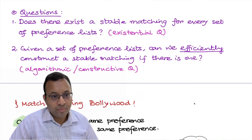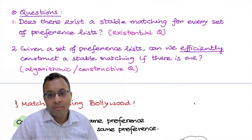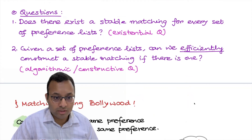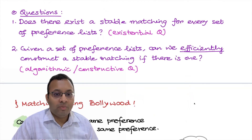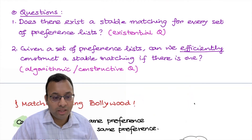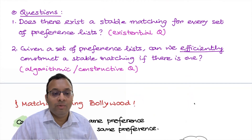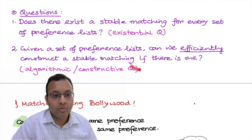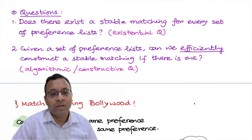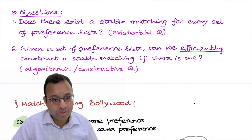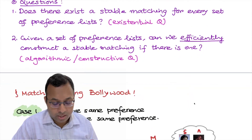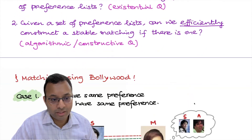We saw some examples where some matchings are stable and some are not. But it's not clear whether there is always a stable matching for every set of preference lists. This is an existential question — even if we give you exponential time, can we always guarantee a stable matching? And second, if it is true, can we efficiently construct a stable matching? That is the algorithmic or constructive question. We'll study these questions, but first let's spend some more time with Bollywood looking at what kinds of stable matchings exist.